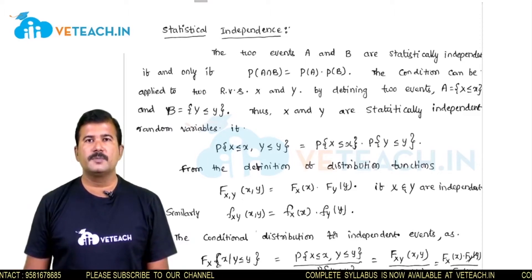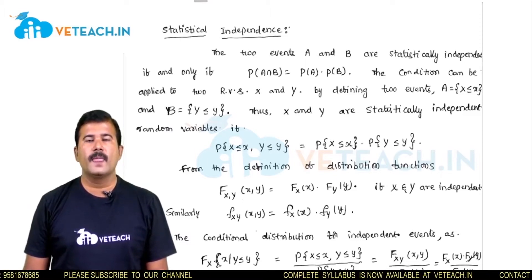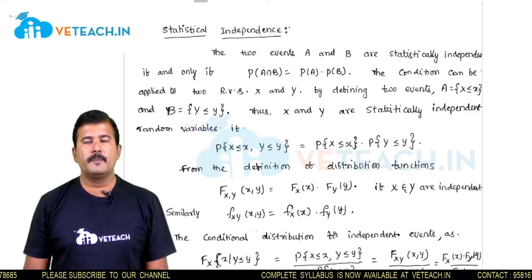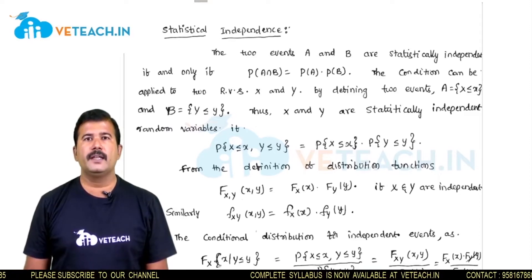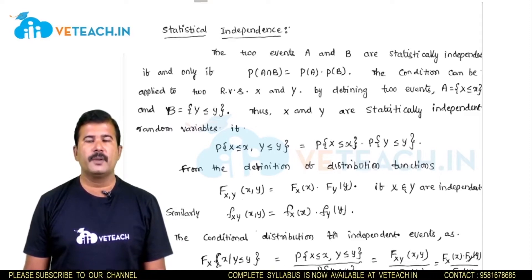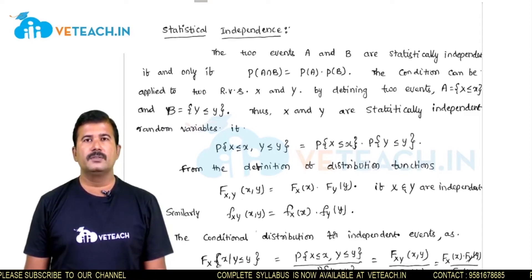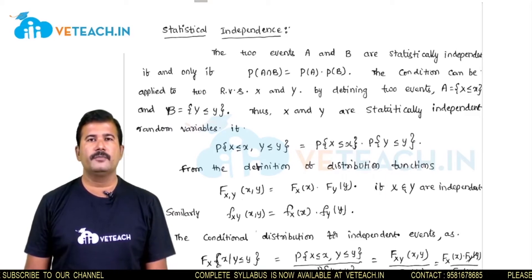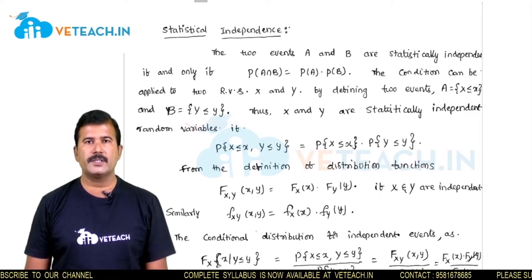Conceptually, we can explain this as: the probability of happening of one event A does not affect the probability of happening of B. That is the meaning of independent events.